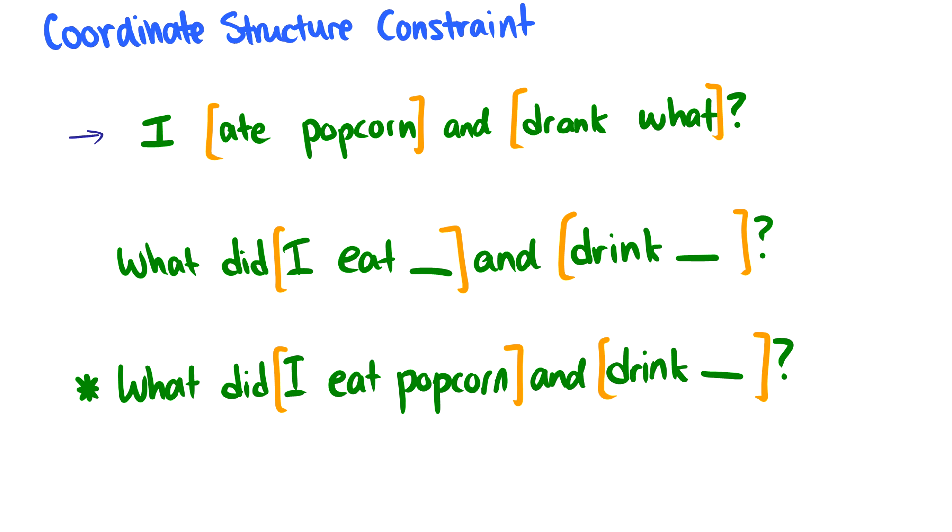I ate popcorn and drank what? And that's fine because we know we ate popcorn but we're curious about what we drank. So if we try to make a sentence out of it, we could say something like: What did I eat and drink? And that's fine because we're saying, well, I ate something and drank something. So we're taking the object of both of these verbs that are coordinated and pulling it out. What we can't do is we can't pull out just one of the objects. So we can't say: What did I eat popcorn and drink?